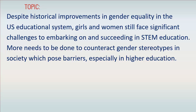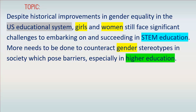Step 1 in the grid exercise is to identify core concepts. What core concepts do you see in this research question? Probably gender, girls, and women is one. STEM education may be another. We may also focus on information about the educational system in the U.S., and perhaps focus on higher education — meaning anything above high school, so college and university. It's okay if you've picked out other core concepts than these.